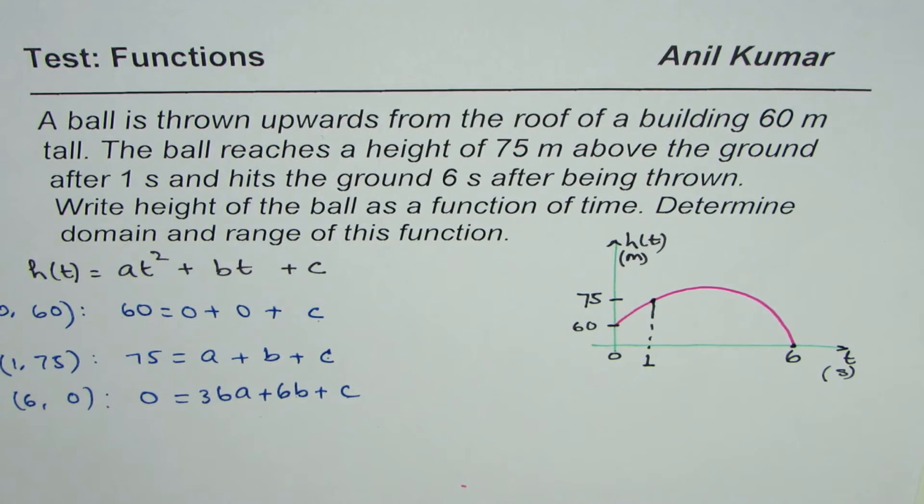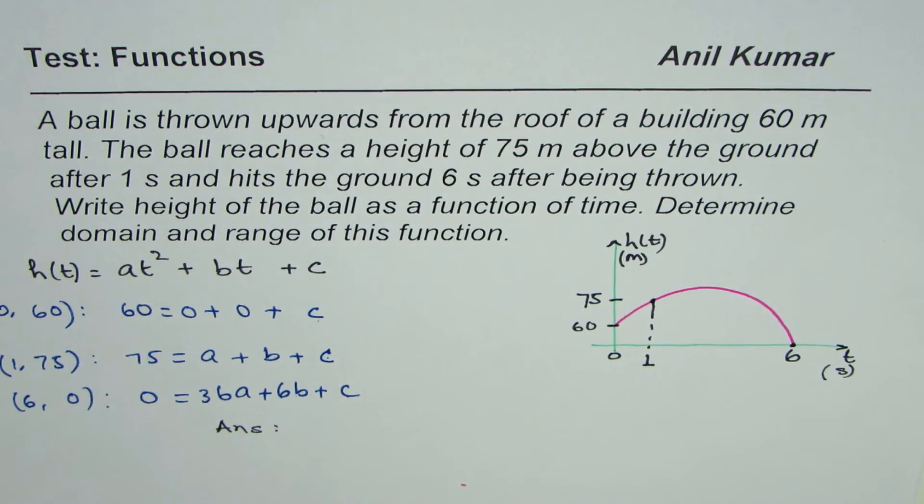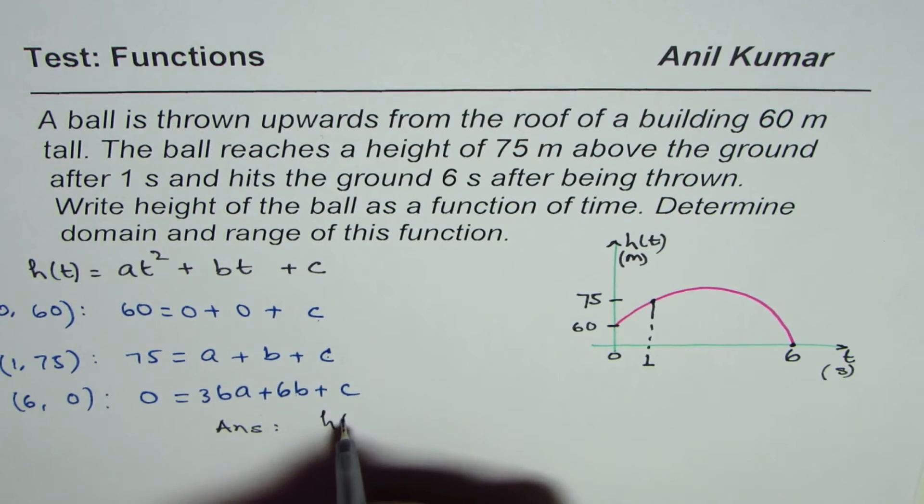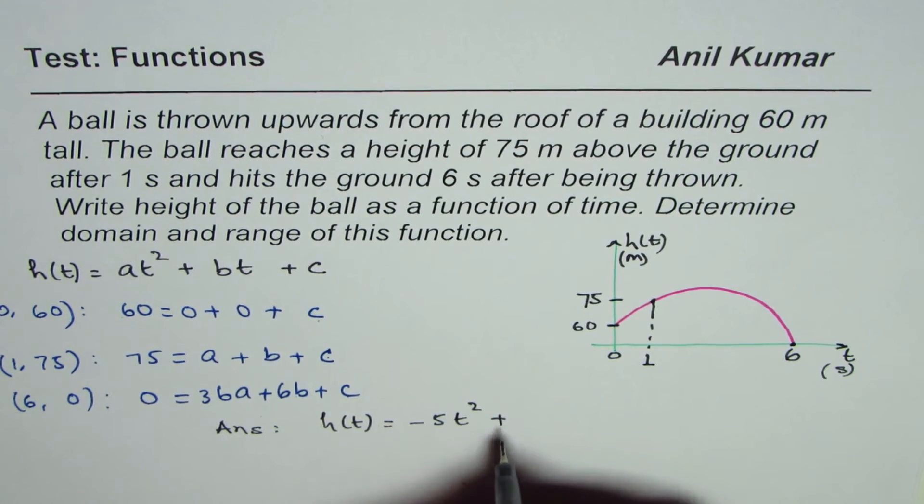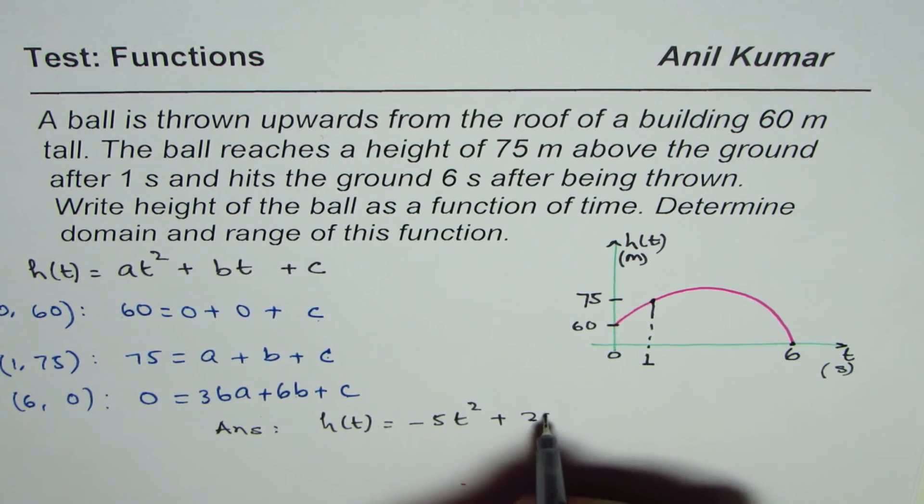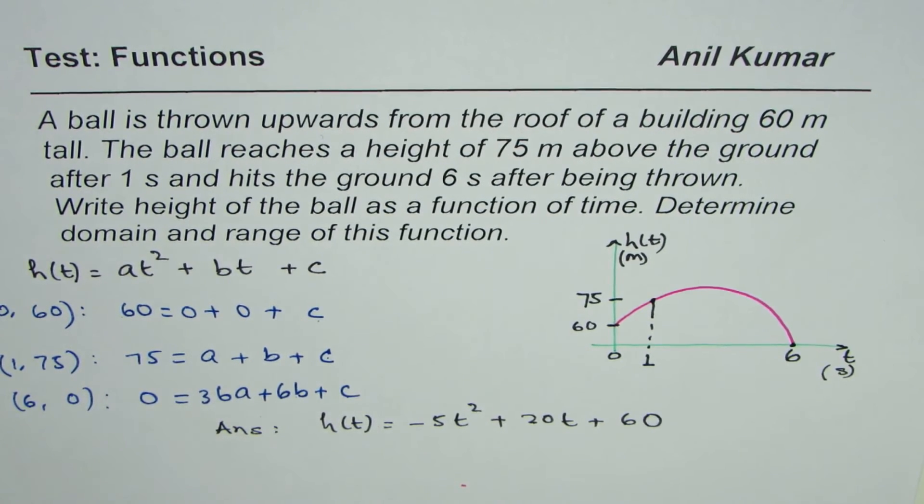Once you solve, you can write down the answer. The answer should be, it is the same answer which we got in one of our examples, and therefore I'm writing the answer here: minus 5t square plus 20t plus 60. So that is the expected solution of the given equation.